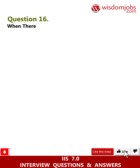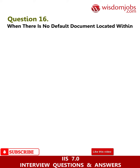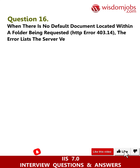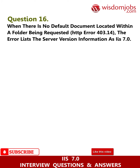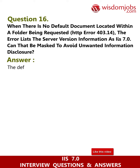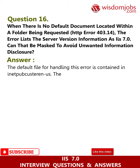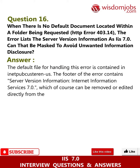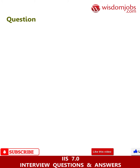Question 16: When there is no default document located within a folder being requested, HTTP error 403.14 occurs. The error lists the server version information as IIS 7.0. Can that be masked to avoid unwanted information disclosure? Answer: The default file for handling this error is contained in inetpub. The footer of the error contains server version information: Internet Information Services 7.0, which can be removed or edited directly from the HTML file.